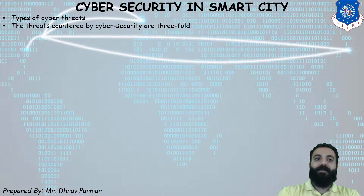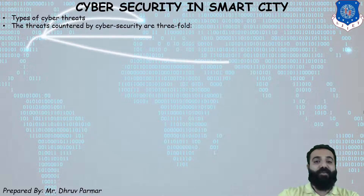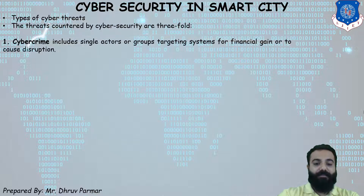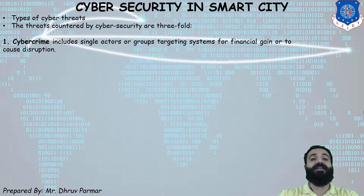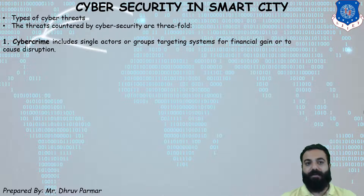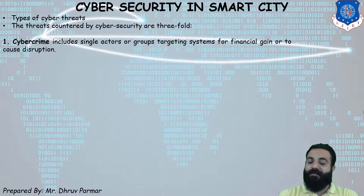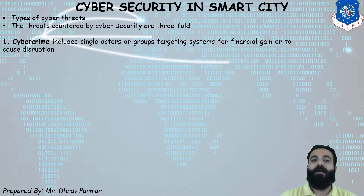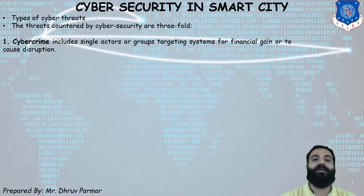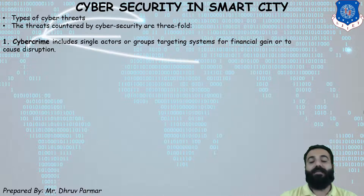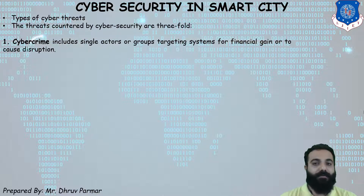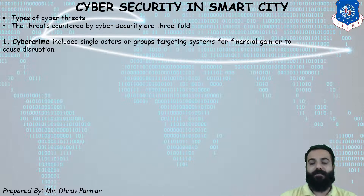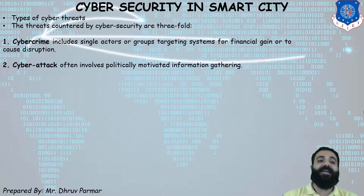The threats countered by cyber security fall into three types. The first is cybercrime, which includes single actors or groups targeting systems for financial gain or disrupting users. Cybercriminals target well-known companies like Microsoft and YouTube for financial purposes or to create disruptive situations.